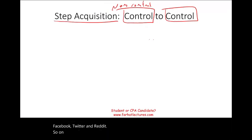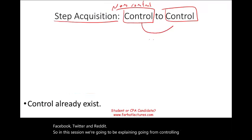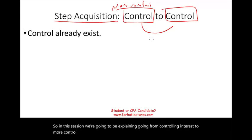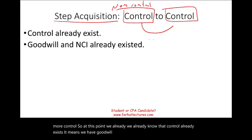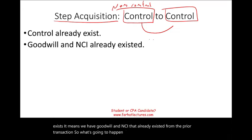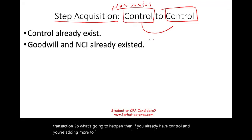In this session, we're going to be explaining going from controlling interest to more control. At this point, control already exists, which means we have goodwill and NCI that already existed from the prior transaction. So what's going to happen if you already have control and you're adding more to it? You're technically reducing the non-controlling interest.